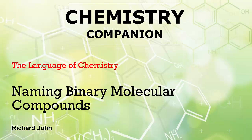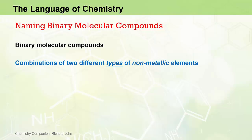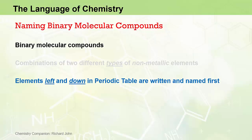In this video, we learn the rules for naming binary molecular compounds. Binary molecular compounds are compounds which contain combinations of two different types of elements — specifically two types of non-metallic elements. When we write chemical formulas and name binary molecular compounds, elements that appear left and down in the periodic table are written and named first.